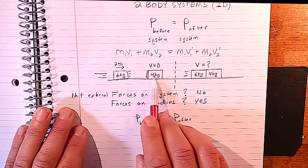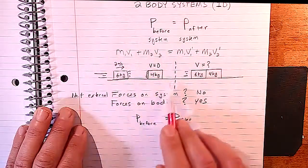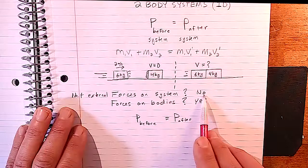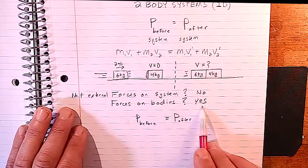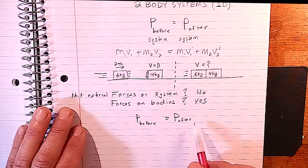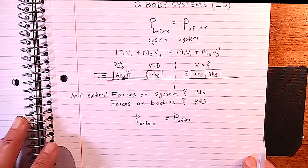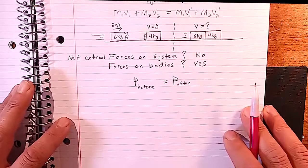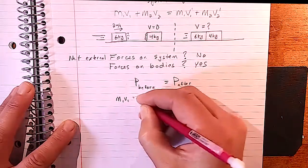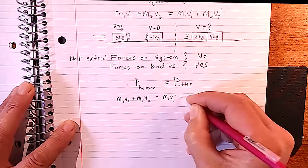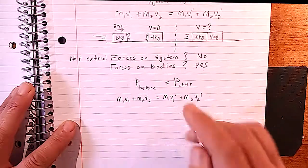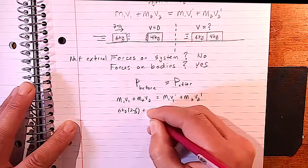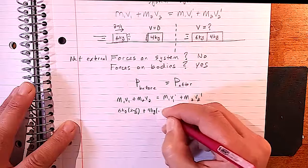Ignoring friction: does block one exert a force on block two? Yes — but nothing outside the system creates a net external force. So there are no net external forces on the system, meaning p before equals p after. Let's solve for the velocity after the collision using m1v1 + m2v2 = m1v1′ + m2v2′.